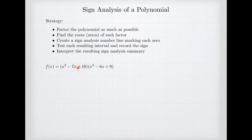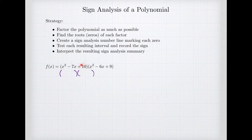We want to take this first quadratic factor, x squared minus 7x plus 10, and try to think of that as itself a product. We've got a constant coefficient of 10 and a leading coefficient of 1, so 1 times 10 is 10. We're looking for factors of 10 that add to negative 7. We realize that x minus 2 times x minus 5 will be the factoring that we want.